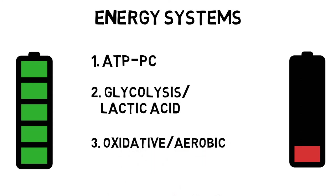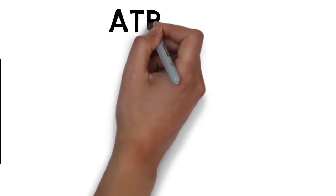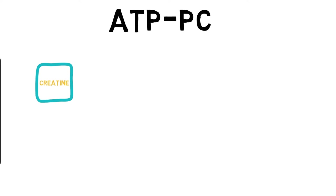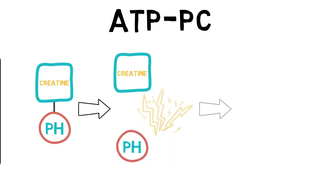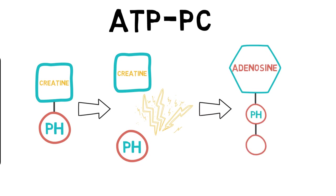The first energy system we are interested in is the ATP-PC system, which specialises in high intensity activity over short durations. Once all the stored ATP has been used up, the body can break down phosphocreatine, or PC for short, into a phosphate molecule, a creatine molecule, and some energy. This newly single phosphate molecule can then use this energy and combine with an ADP to reform ATP.